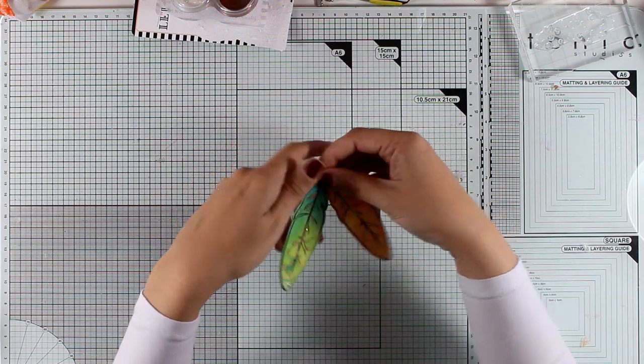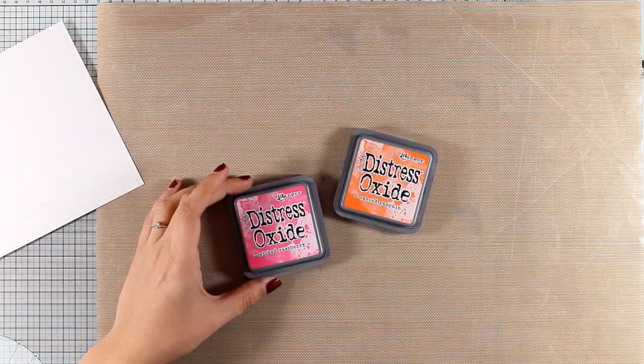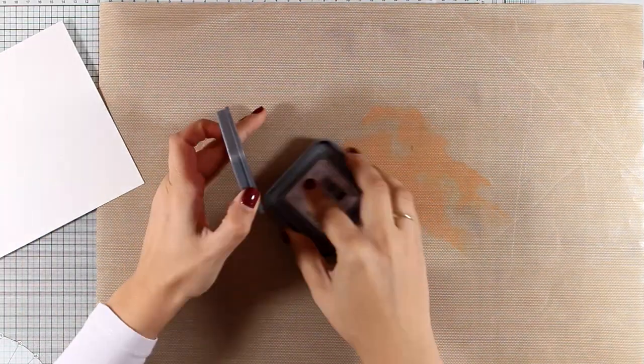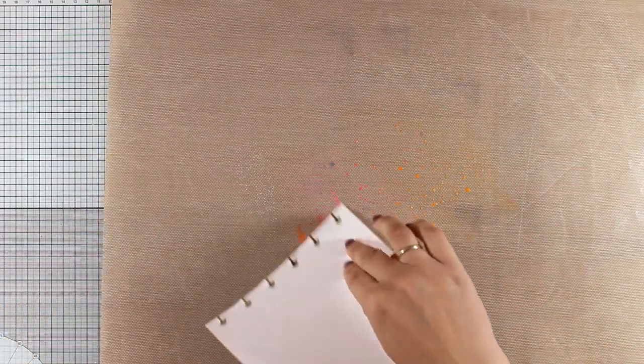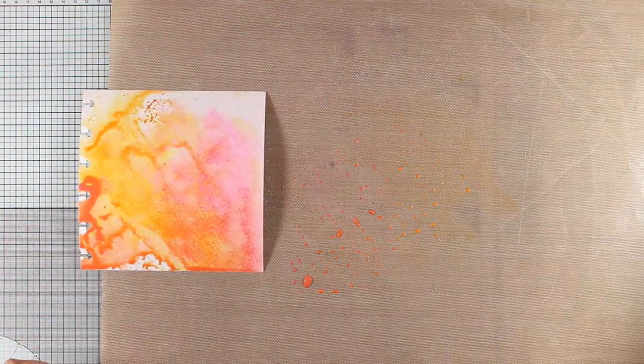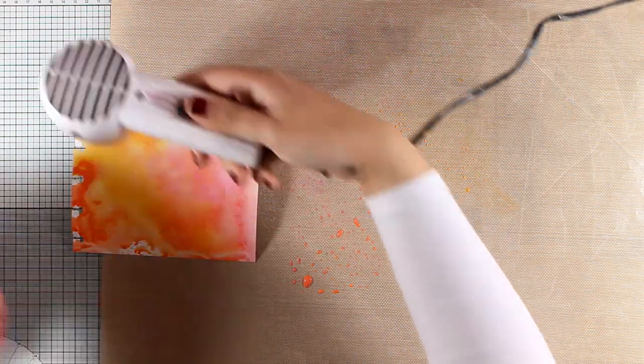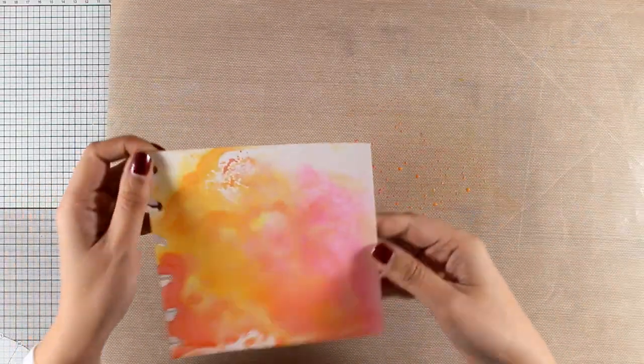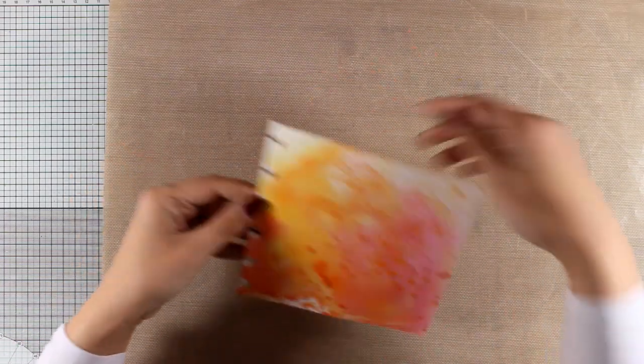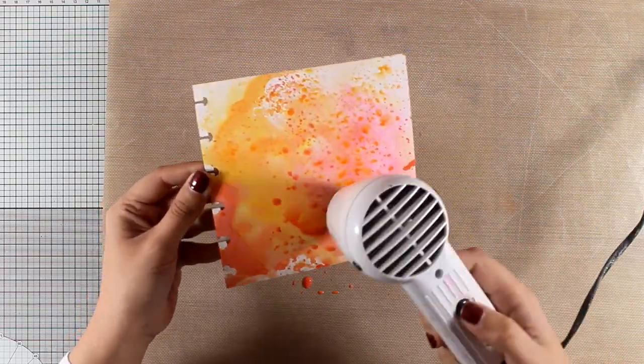I'm going to apply my embossing powder again and after heat setting everything I do have some shine on my feathers. So I am going to put those feathers aside for now and I will be working on my background. Again I'm working on my 6x6 watercolor art journal and I will create with the same technique as I did for the feathers my background. Here I used I believe that was worn lipstick and carved pumpkin, and again I'm using the same technique making sure that I dry each layer in between.